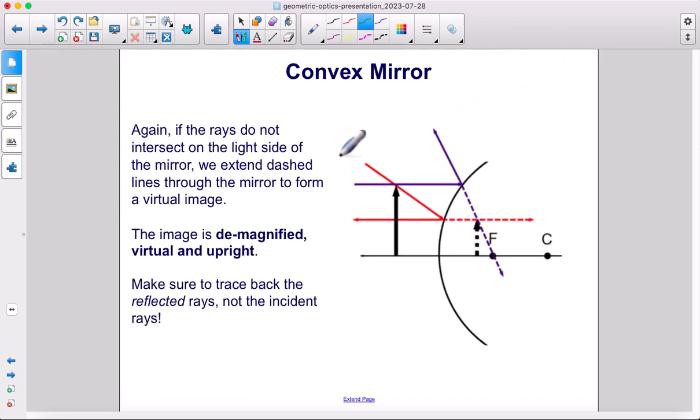Again, if the rays do not intersect on the light side of the mirror, we are going to end up with a virtual image. What we do is we trace back, or dash back, the reflected rays. Make sure that you are dashing back the reflected rays, not the incident rays.